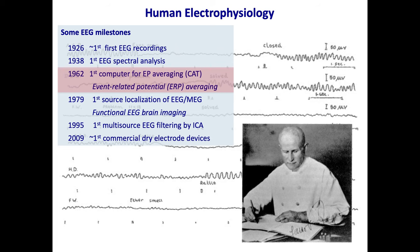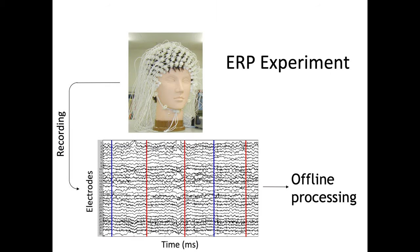So first if you don't know what event-related potentials are I'm going to try to explain that. In this slide you have a cap here, it's a dummy, but you have many electrodes on the cap that record electrical potential over time and then you present stimuli to subjects. So here you have two types of stimuli, the blue ones and the red ones, and these can be sounds, these can be images of different types. Then once you have acquired the data you can do offline processing.